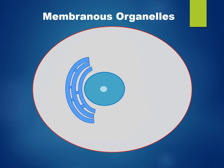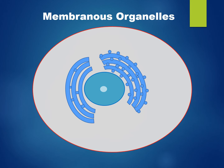The endoplasmic reticulum produces and modifies secretory products. The smooth endoplasmic reticulum manufactures lipids and steroids. The rough endoplasmic reticulum manufactures proteins.